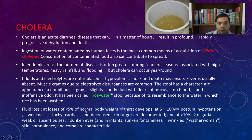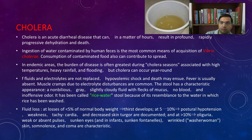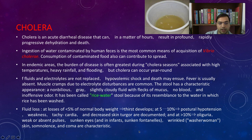If fluid loss is less than 5%, the person develops severe thirst. If 5–10%, the person gets postural hypotension, weakness, tachycardia, and decreased skin turgor. If more than 10%, the person develops oliguria, weak or absent pulses, sunken eyes, wrinkled skin, and may go into coma. So cholera is an important cause of diarrhea and it is essential to rehydrate the patient.